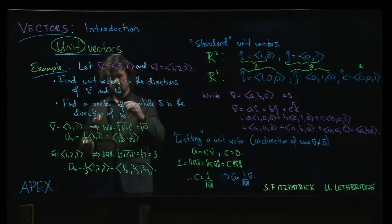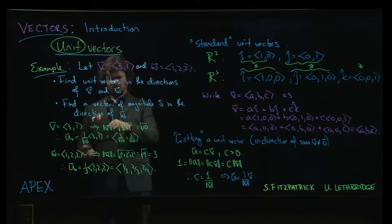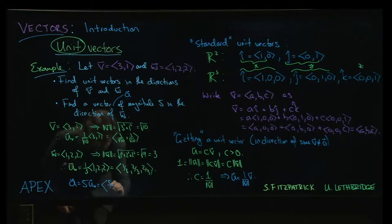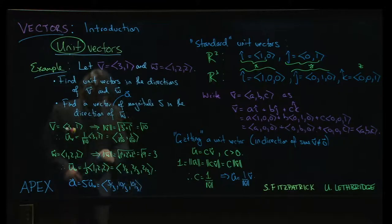And so, let's give this vector a name. Let's see, we've used u, v, w, let's call it a. Why not? Okay. So, a would simply be 5 times the vector uw. So, that's going to be 5 times all of those. So, 5 times 1/3 is 5/3, and then 10/3, and then 10/3 again. Okay.